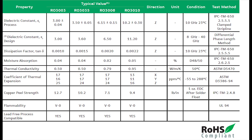The RO3003 material has a dielectric constant of about 3, the RO3006 is about 6.15, and the RO3010 is 10.2. Another key attribute to consider is dissipation factor. The dissipation factor of 0.001 for RO3003 is very low — these are considered very low-loss materials. Even the higher dissipation factor of the RO3010 at 0.0022 is still considered very low-loss.